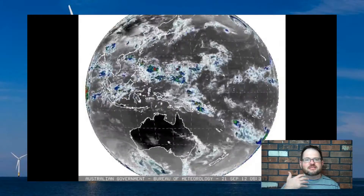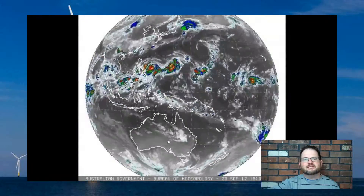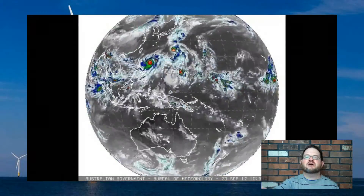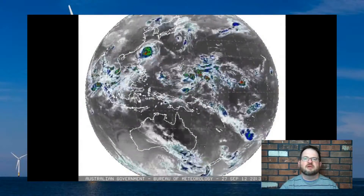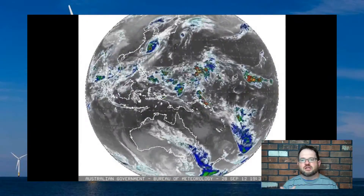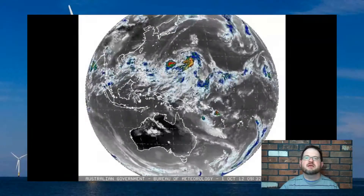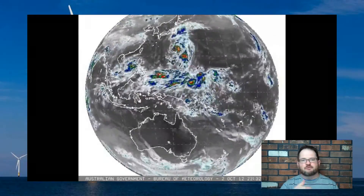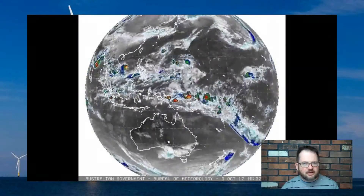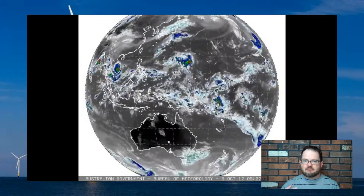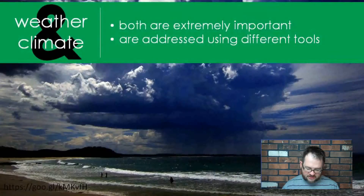That doesn't mean that the climate is different from hour to hour. If we had this satellite loop for years and years and could study it, we could see that this location tends to be cloudier and this location tends to be clearer. We could learn a lot about the climate of the region over a very long period of time. Weather is a rapidly changing, chaotic system — much more difficult to forecast than climate, as we'll learn later in the semester.